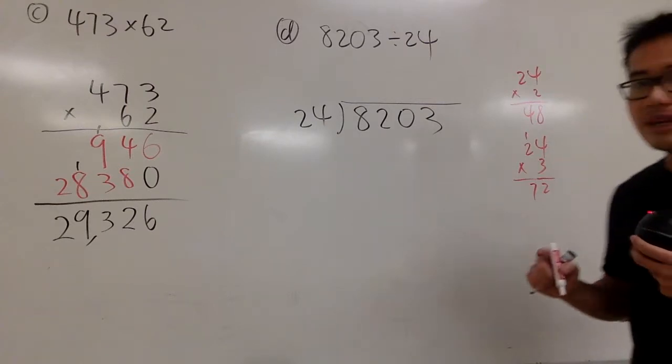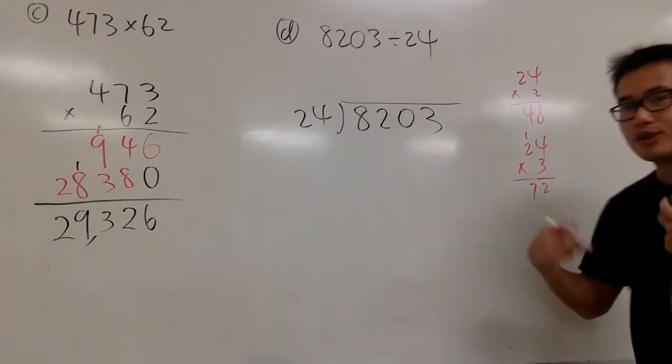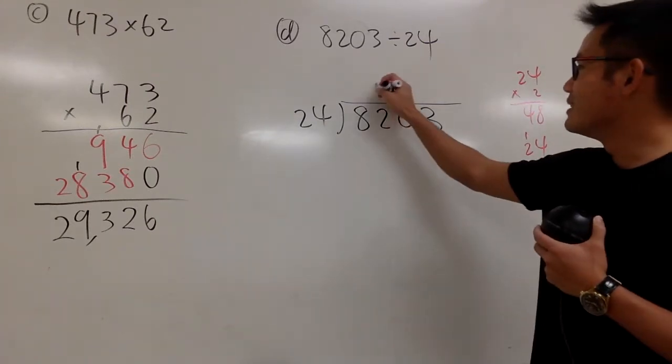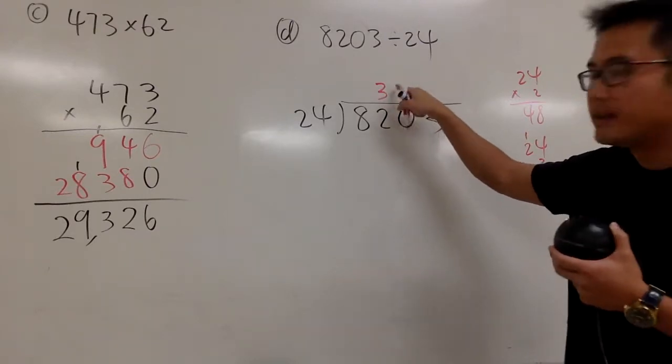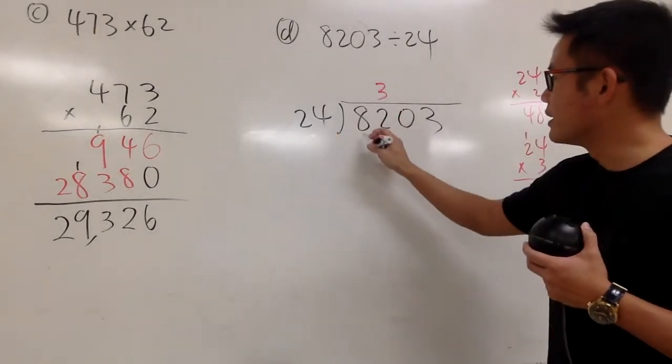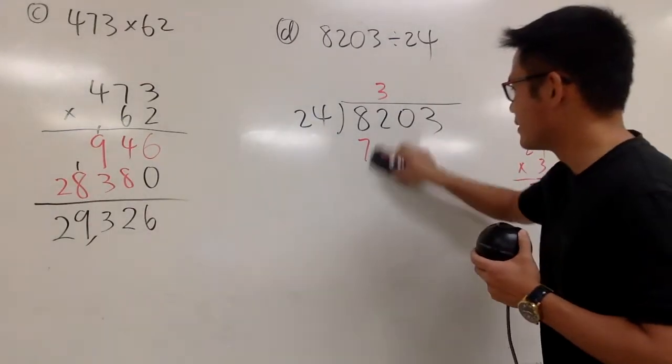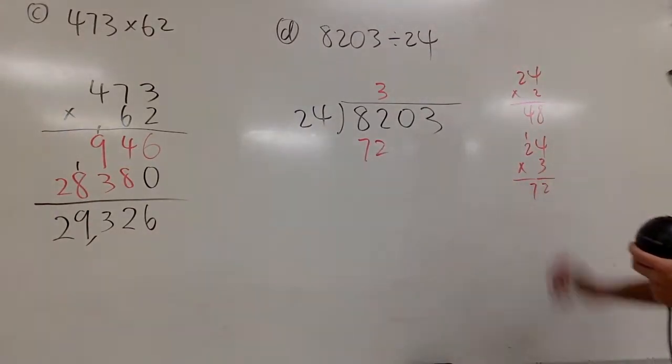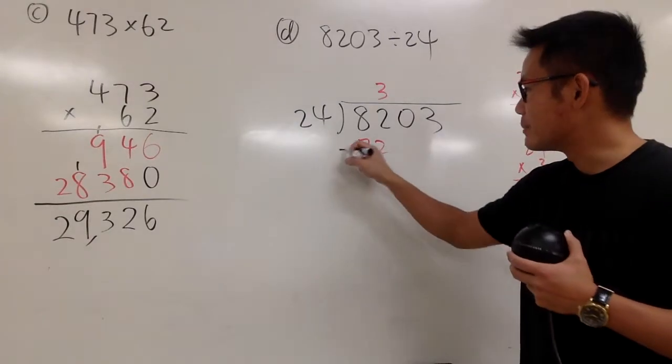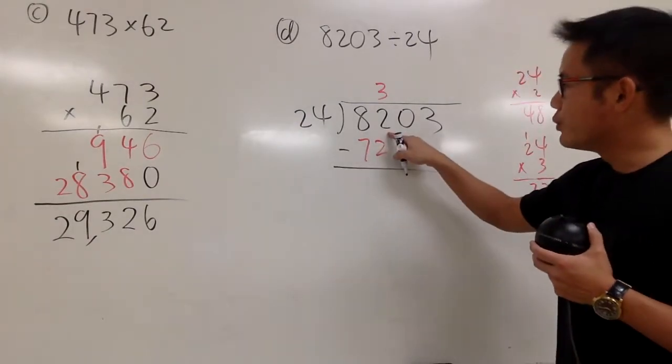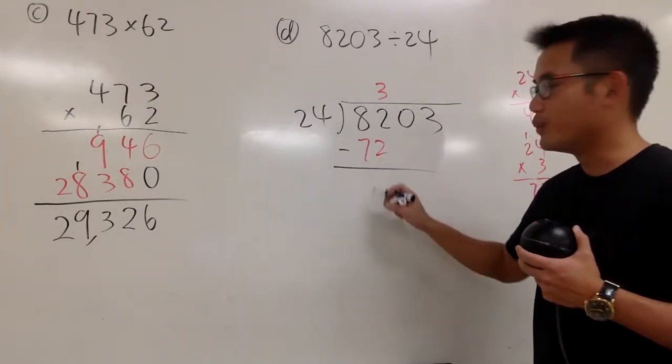And that's actually enough, because if you have one more it's going to go over. So that's no good. So we have 3. Now, 3 times 24, we get 72 because we did it right here. And then we'll continue by subtracting. And 82 minus 72, we get 10.